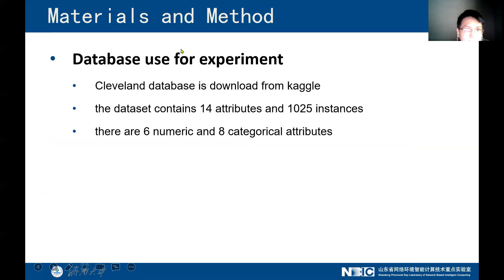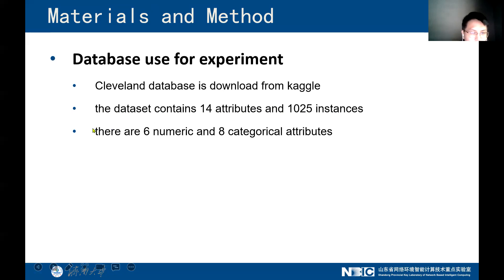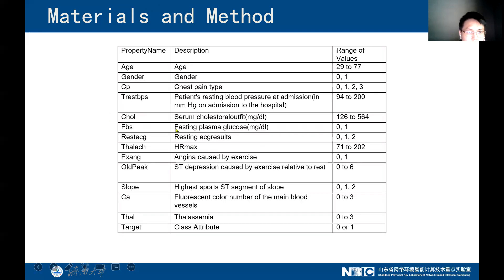Here is the material and method section. The database used for the experiment is the Cleveland database obtained from the UCI repository, which is an open source website. The dataset contains 14 attributes and 1,025 instances, with six numeric and eight categorical attributes. Here is a table showing the description of the dataset.